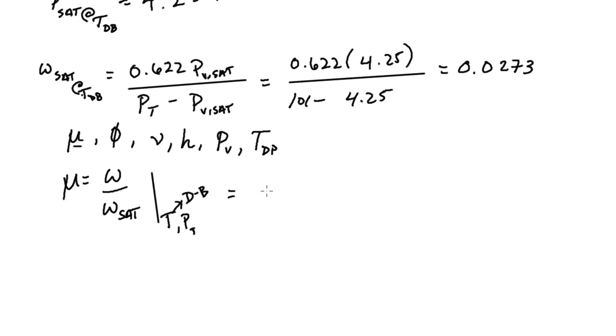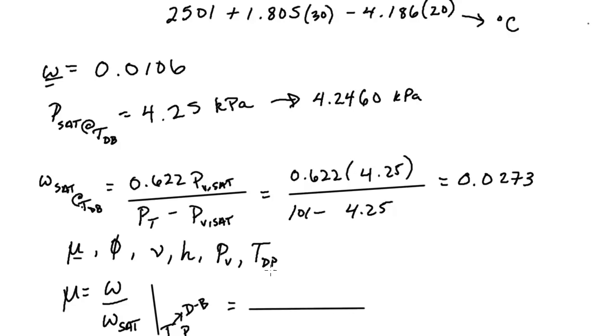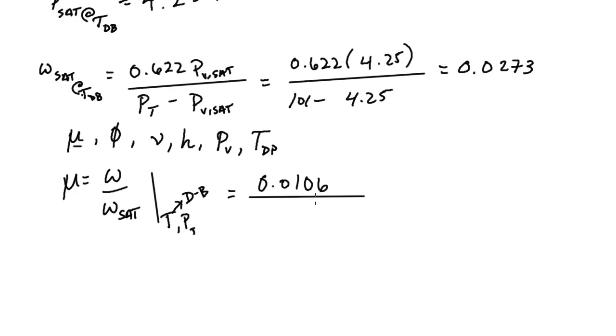So if I do that, I'll get a fraction that looks like this: 0.0106 divided by 0.0273. And this is all unitless. And this will come out around 0.39 or 39%. So we now have the degree of saturation.